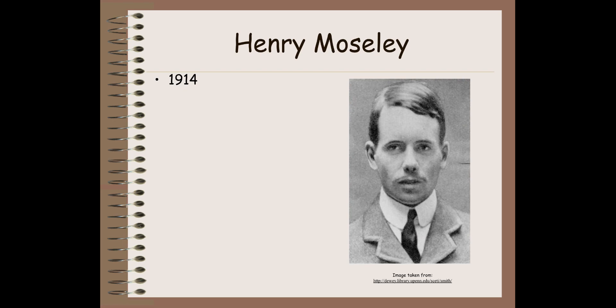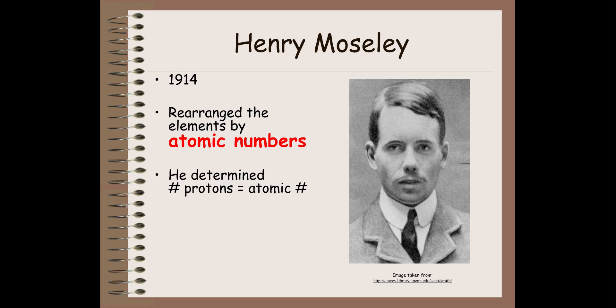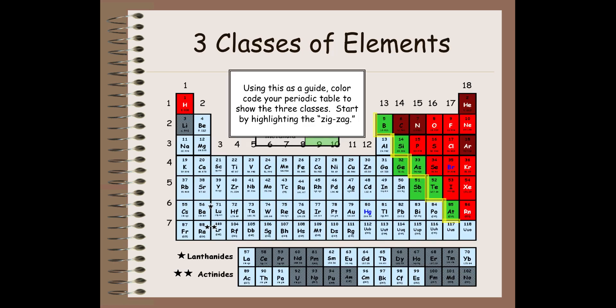Then along came Henry Moseley. In 1914, Moseley rearranged the elements in the periodic table according to atomic numbers instead of atomic masses. He determined that the number of protons is equal to what is called the atomic number. This gives us the periodic table that we have today.